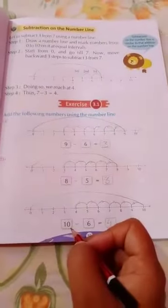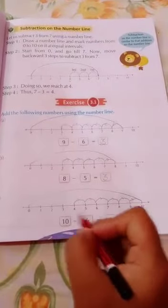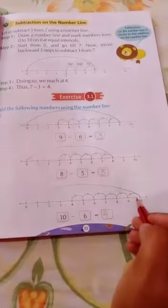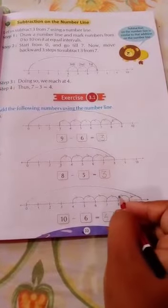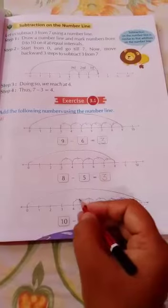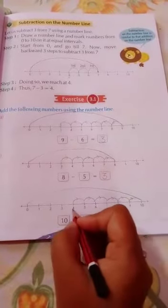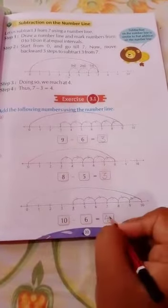Now question number 3: 10 minus 6. Now kids, we are going to go to 10. After, we have to go backward minus 6: 1, 2, 3, 4, 5, 6. After subtracting 6, our answer is 4. 4 is the answer.